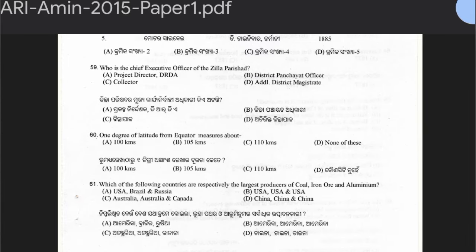Question 59: Who is the Chief Executive Officer of Jilla Parishad? Options: Project Director DRDA, District Panchayat Officer, Collector, or Additional District Magistrate. The answer is option C — Collector. The District Magistrate is the Executive Officer of Jilla Parishad. Question 60: One degree of latitude from the equator measures about 100 km, 105 km, or 110 km. Technically the answer is 111 km, but the nearest option is 110 km, so option C is correct.